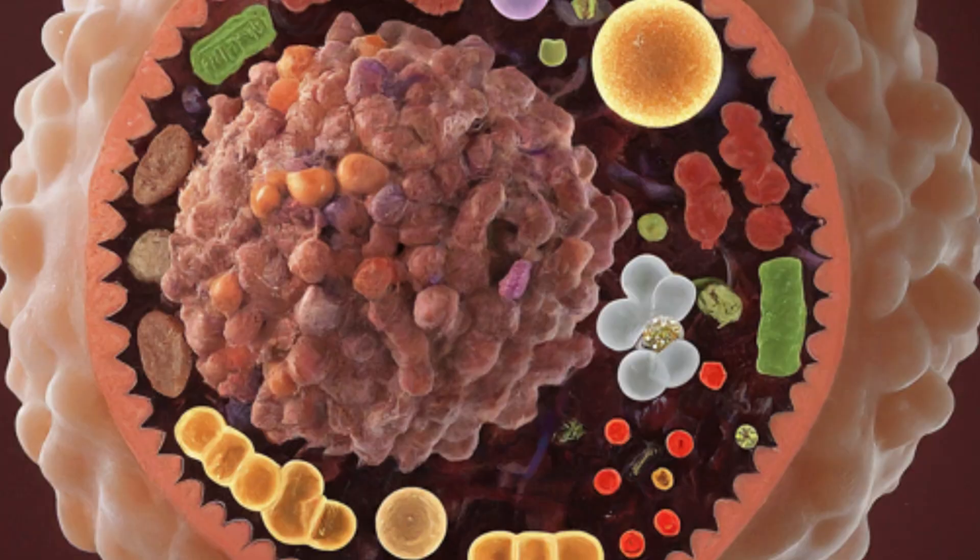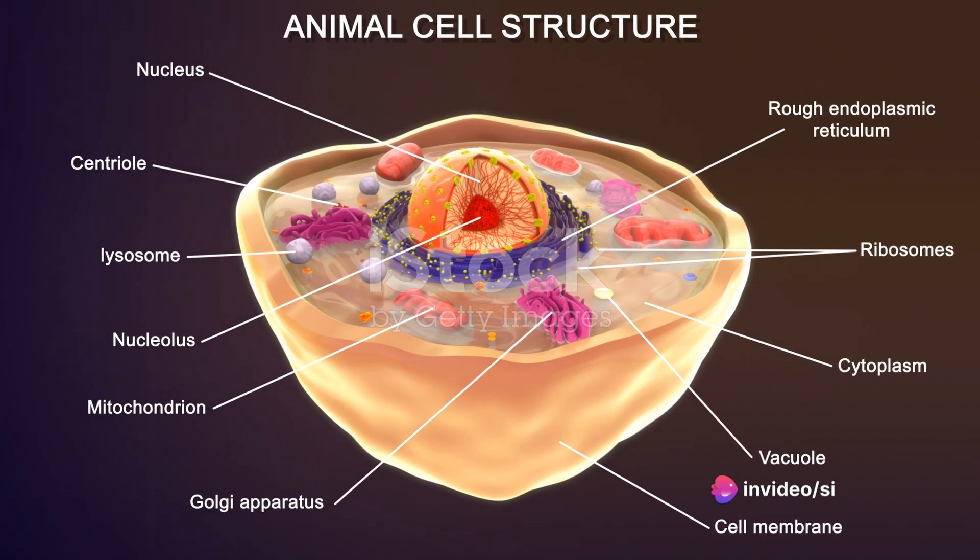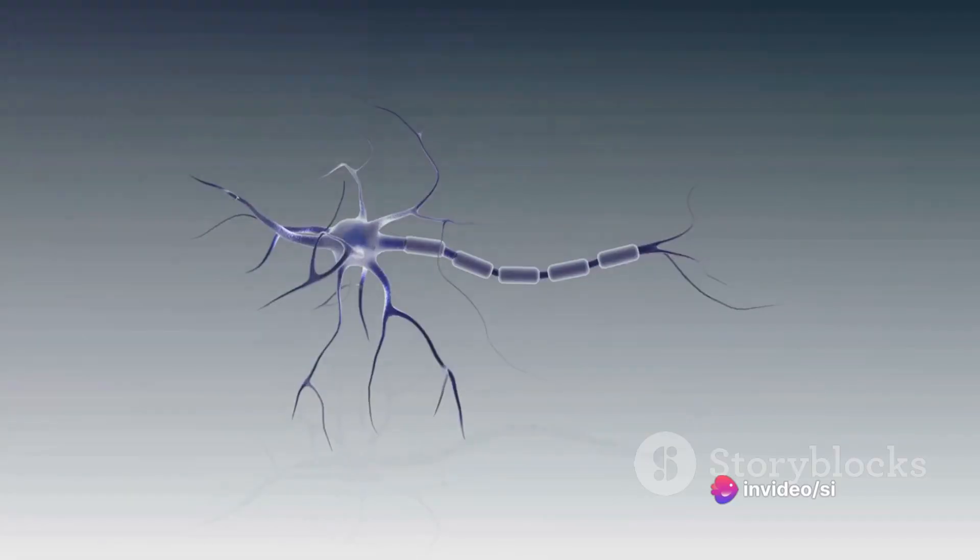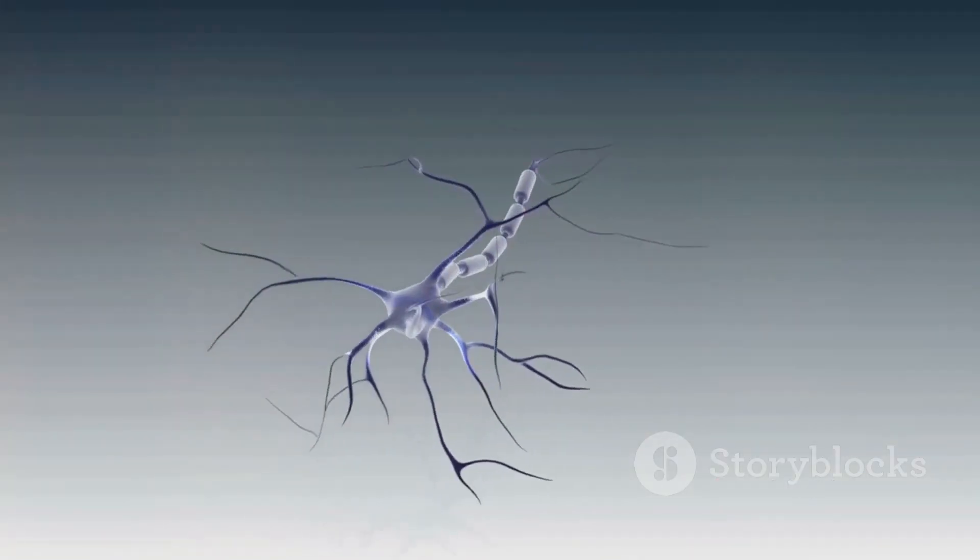To sum it up, the nucleus, with its double membrane structure and nuclear pores, safeguards the cell's genetic material. It is the conductor of the cell, directing the symphony of cellular functions from growth and division to protein synthesis.